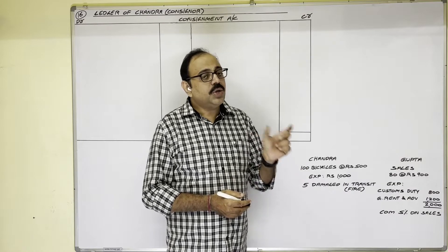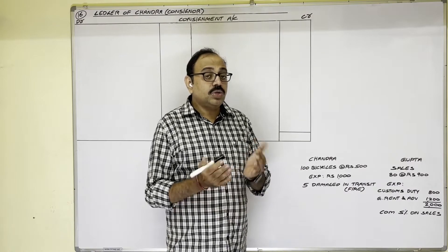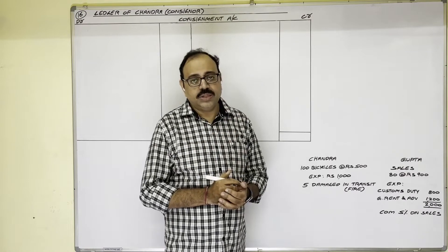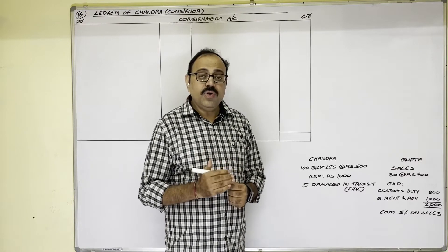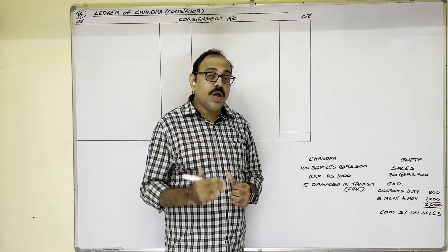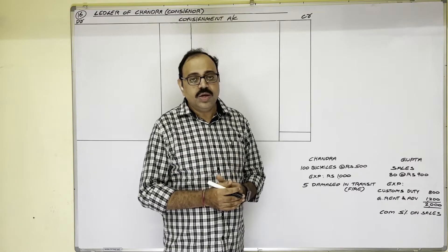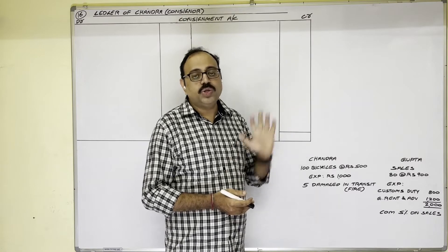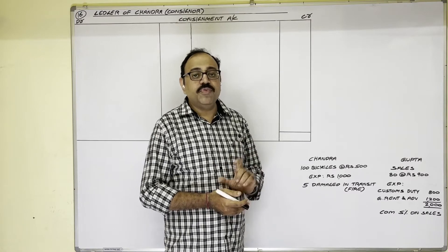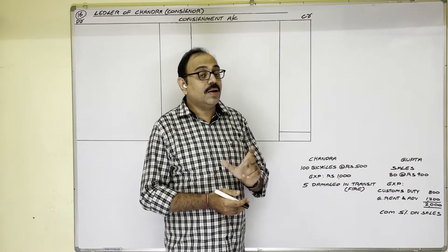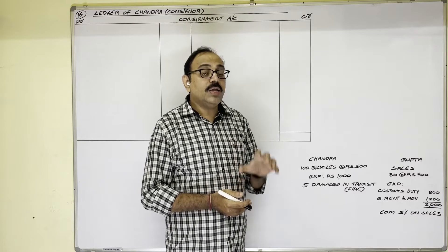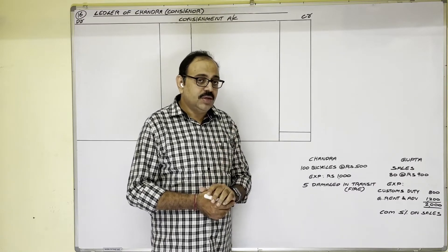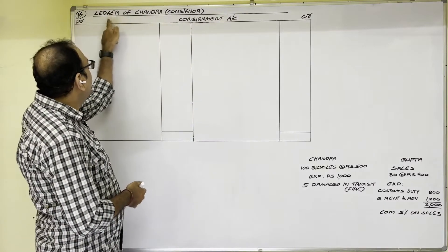The reason is: normal loss value stays within limits, so we can charge it to unsold stock. But abnormal loss quantity may be beyond the limits — if we charge it to unsold stock, the unsold stock value increases and nobody will buy at higher prices. Therefore, instead of charging abnormal loss to unsold stock, we calculate it separately and show it in the consignment account.